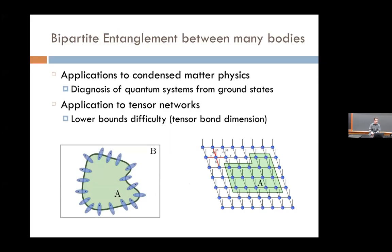You can think of the Bell pair as the stem cell for two-party correlations from which any state can be made. If you only have one copy of the state it's more subtle — the entanglement spectrum, the whole Schmidt spectrum, is the unique invariant, or equivalently the set of all alpha Rényi entropies. Bipartite entanglement has proved useful in two directions in many-body physics: detecting what phase you're in, and the area law lower-bounding the difficulty of tensor network calculations.